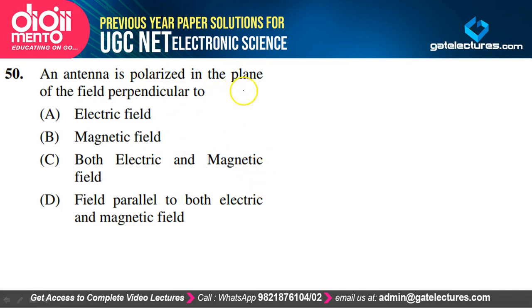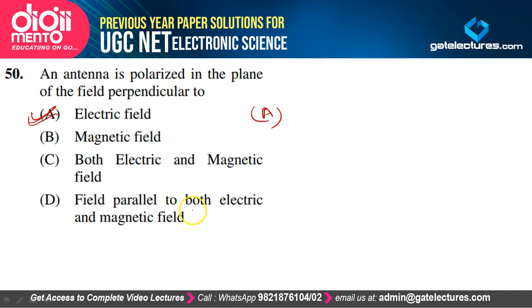An antenna is polarized in the plane of the electric field — perpendicular to the magnetic field. Option A is correct. It cannot be said to be polarized parallel to both electric and magnetic fields or perpendicular to both. Only option A is true. Thank you very much for watching.